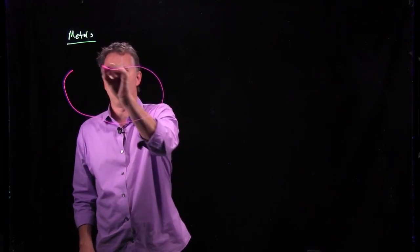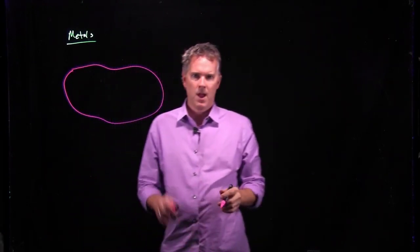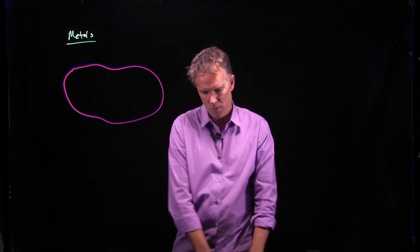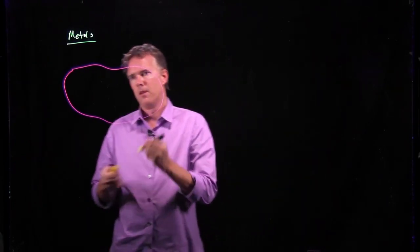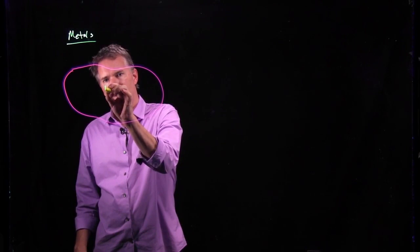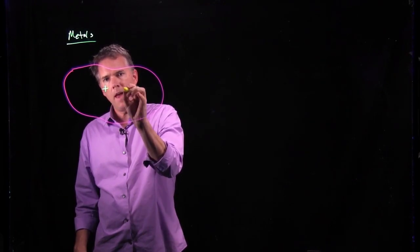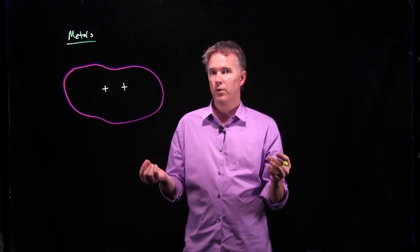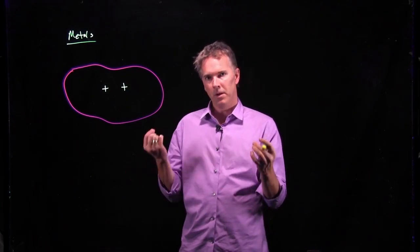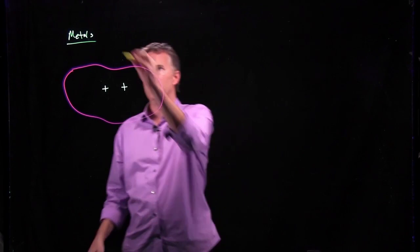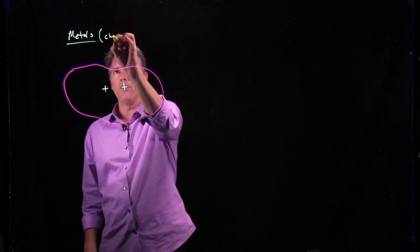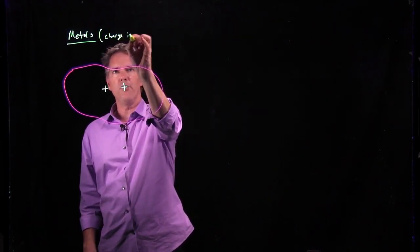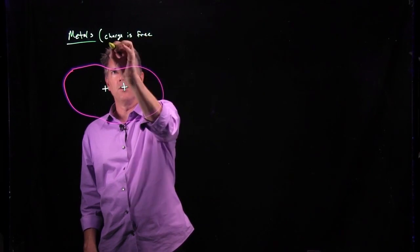If I have this big blob of metal and I put some charge on it, where is that charge going to go? Well, if I put a positive charge there and I put a positive charge right there, they are going to, of course, push apart because what signifies a metal is charge is free to move.